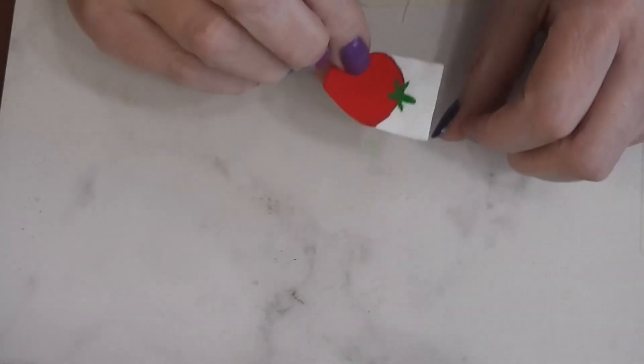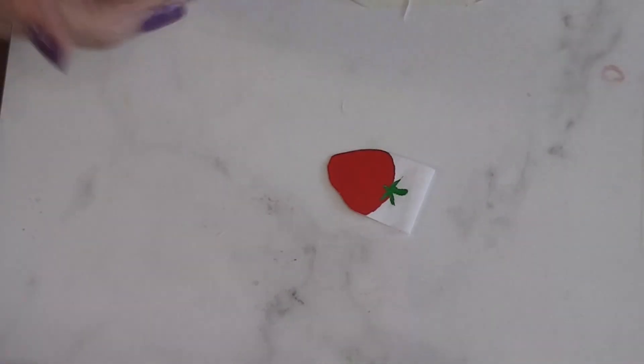Now we have our leaves and our stem on both sides. So now I'm going to add some seeds to my strawberry. I'm going to use yellow paint. I want yellow seeds.